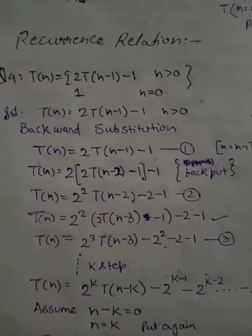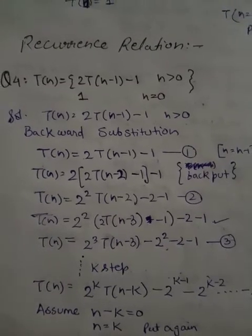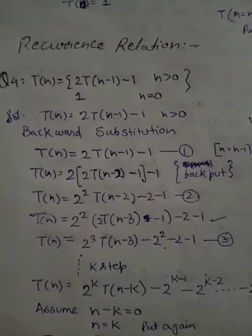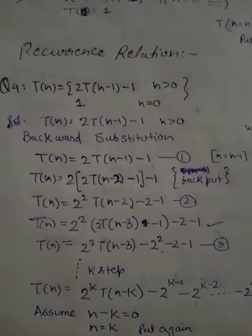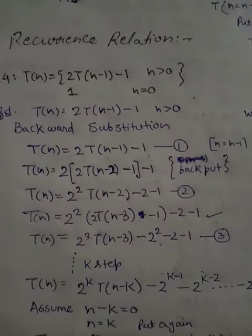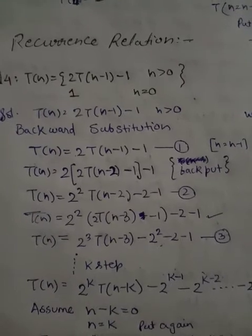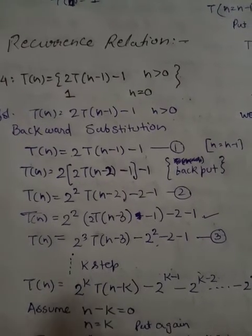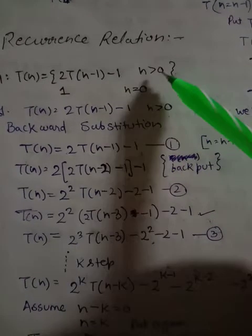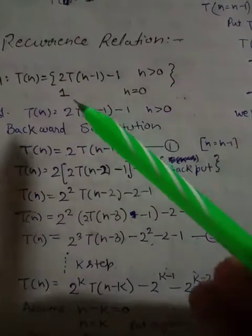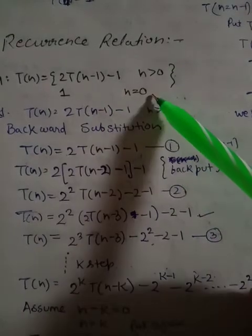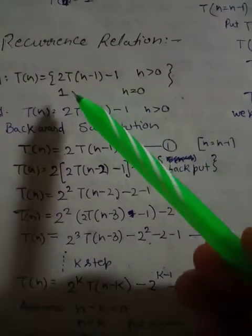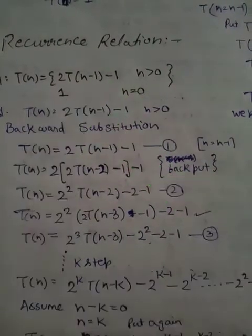Here is a recursion relation problem: T(n) = 2T(n-1) - 1, for n greater than 0, and T(0) = 1.